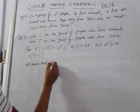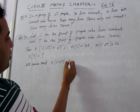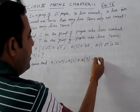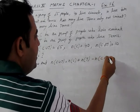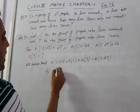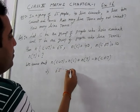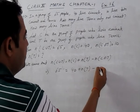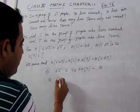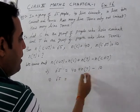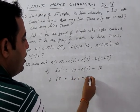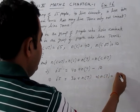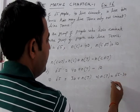Using the formula: n(C∪T) = n(C) + n(T) - n(C∩T). Putting all values: 65 = 40 + n(T) - 10, so 65 = 30 + n(T), therefore n(T) = 65 - 30 = 35. The people who like tennis are 35.